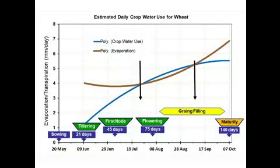We can use this information and general knowledge to guide our irrigation requirements. If your crop is at the early vegetative stage, around 30 to 45 to 50 days, it's using between three and four millimeters of water per day, depending on temperature, cloud cover, and wind. So if your irrigation system can deliver 20 millimeters and your crop is using three millimeters per day, then your irrigation interval can be around seven days.